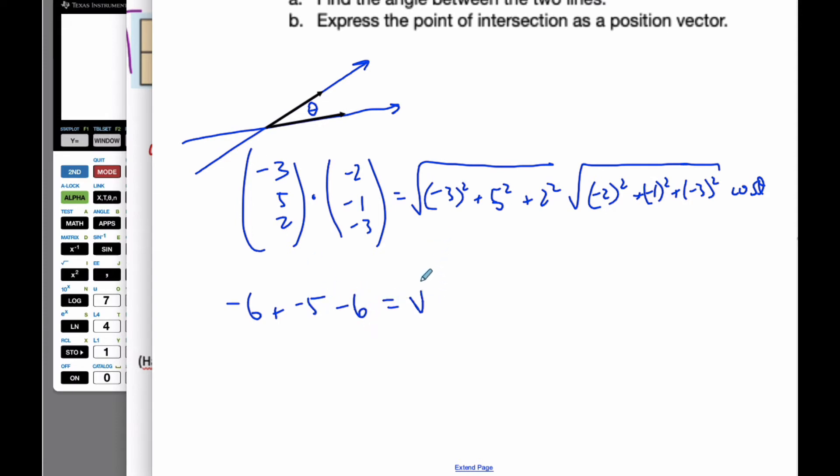That's going to be the square root of 9, plus 25, plus 4, square root of 4, plus 1, plus 9, cosine theta.